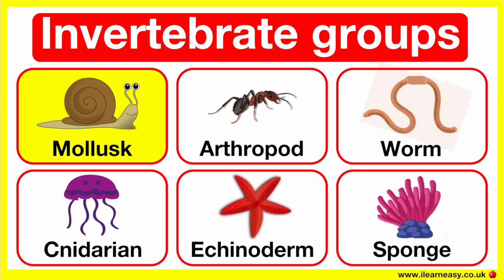There are many different types of mollusks. Some have shells for protection and others don't. For example, snails, squid, and oysters.